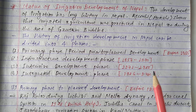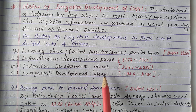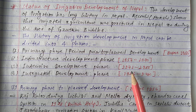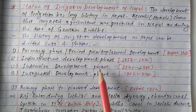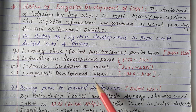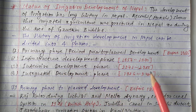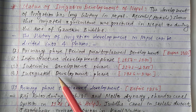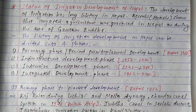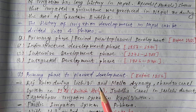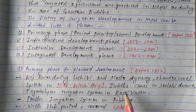The third phase is the Intensive Development Phase, with a time period of 1971 to 1985. After that, the Integrated Development Phase begins, starting from 1986 and continuing to the present. This is the Integrated Development Phase of irrigation in Nepal.